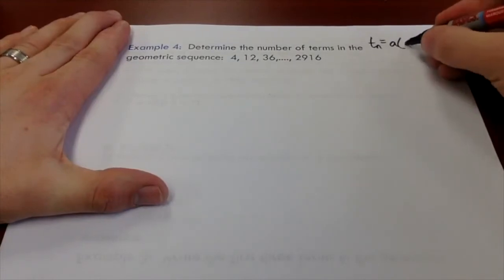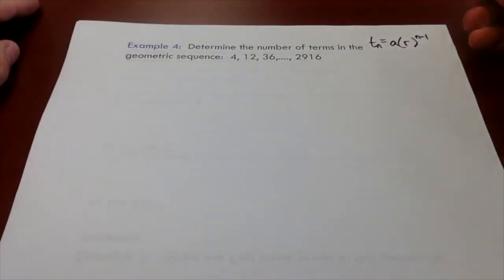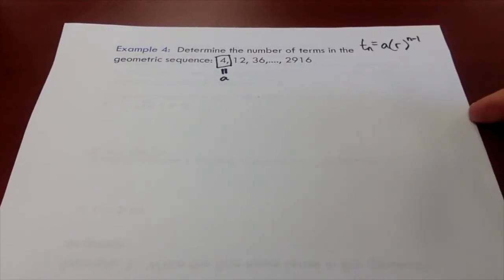So our goal here is to determine the number of terms. We remember a is the first term, r is the common ratio. We raise it to the power of n minus one.